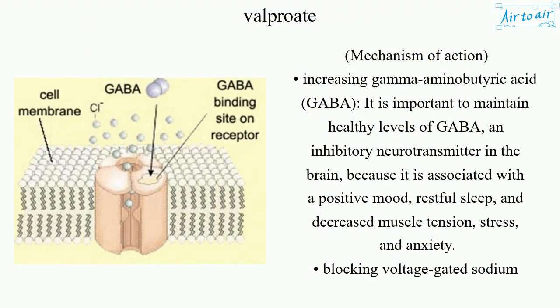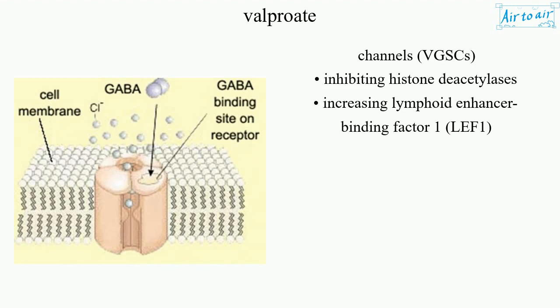Mechanism of action: increasing gamma-aminobutyric acid (GABA). It is important to maintain healthy levels of GABA, an inhibitory neurotransmitter in the brain, because it is associated with a positive mood, restful sleep, and decreased muscle tension, stress, and anxiety. Also involves blocking voltage-gated sodium channels (VGSCs), inhibiting histone deacetylases, and increasing lymphoid enhancer-binding factor 1 (LEF1).